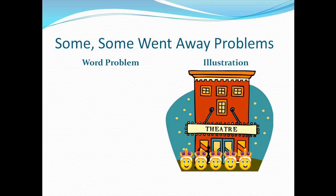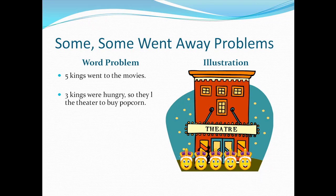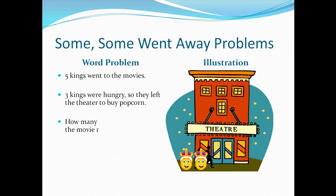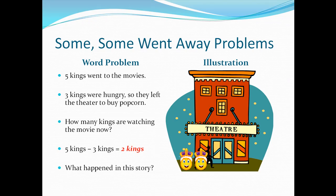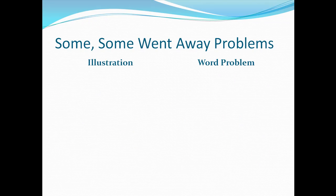I start out this time with five kings that went to the movies. Three kings were hungry, so they left the theater to go buy some popcorn — there's three that go away. So how many kings are watching the movie now? I can see there are two left. Our number sentence would have to say five kings minus three kings equals two kings left at the theater. What happened in this story? Some were there, and some went away.